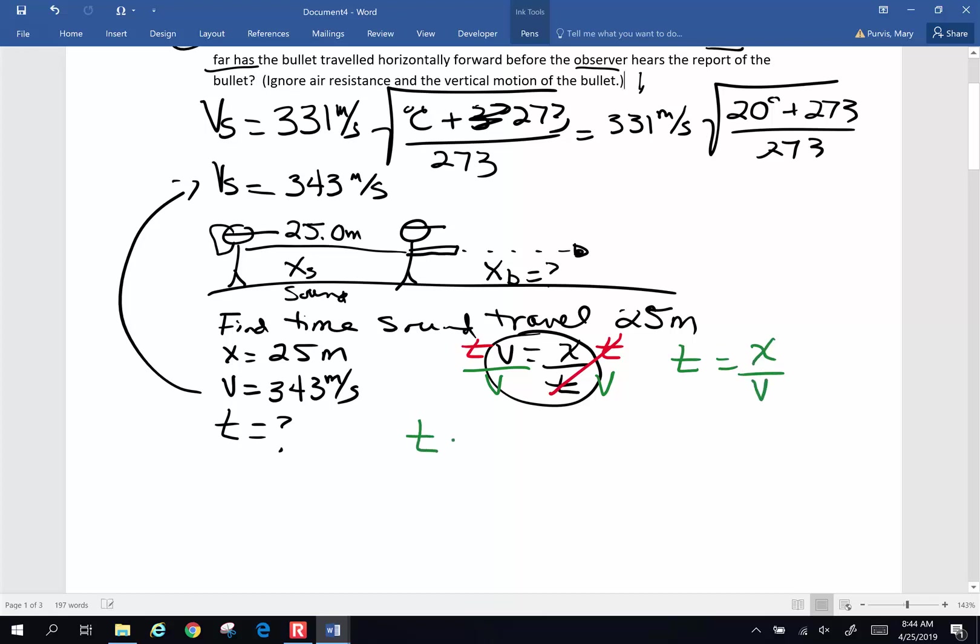Now I'm going to put my numbers in. 25 meters divided by 343 meters per second. And I'm going to pick my calculator up. Make sure I don't make up crazy numbers. 25 divided by 343. And I'm going to get 0.072886.